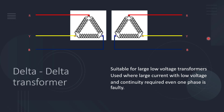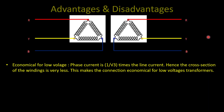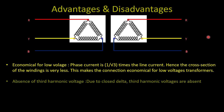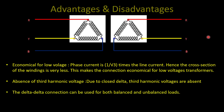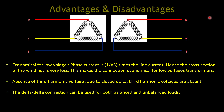The next one is delta-delta transformer. It is suitable for large low-voltage transformers, used where large current with low voltage and continuity is required even if one phase is faulty. This is one of the rarely used transformers. Advantages: it is economical for low voltage because phase current is less than line current and phase voltage equals line voltage. Due to the closed loop, third harmonic voltages are absent. The delta-delta connection can be used for both balanced and unbalanced loads. However, if the current is high, the cross-section area of the winding will be more, making it expensive; if voltage is high, more turns are needed, also making it expensive in some scenarios.